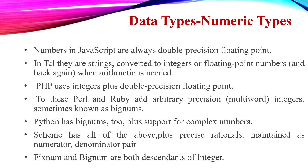The Python scripting language comes with bignum and also supports complex numbers. The Scheme scripting language comes with all numeric types, plus precise rationals — that is, numerator and denominator pairs maintained as numerator and denominator pairs. Fixnum and bignum are both descendants of integer.